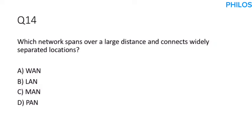Question fourteen: Which network spans over a large distance and connects widely separated locations? The correct answer is the wide area network (WAN). This network spans over a large distance and connects widely separated locations.